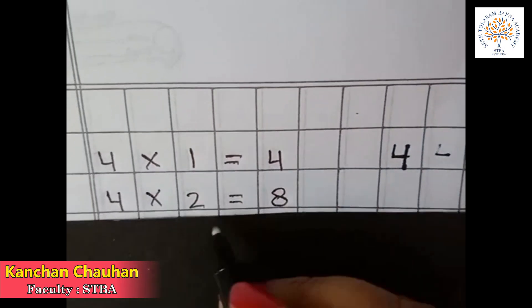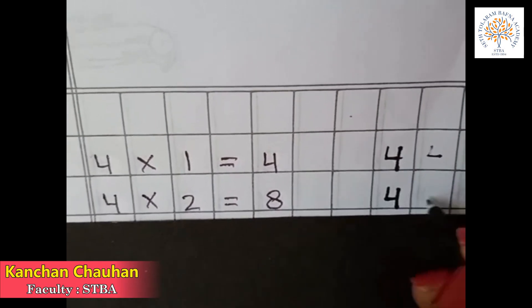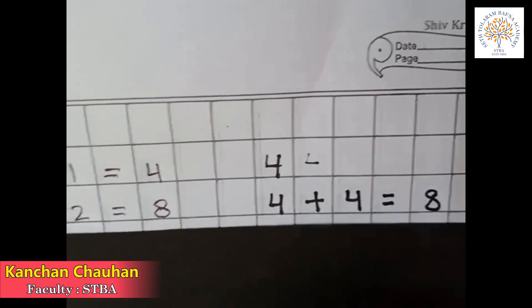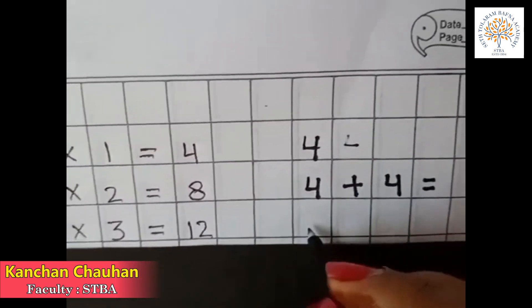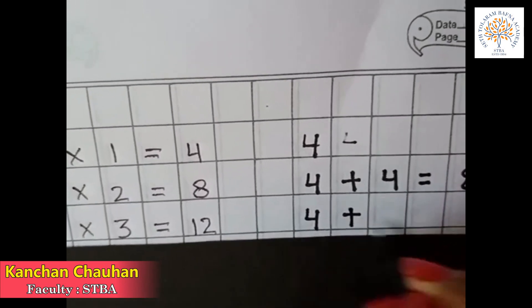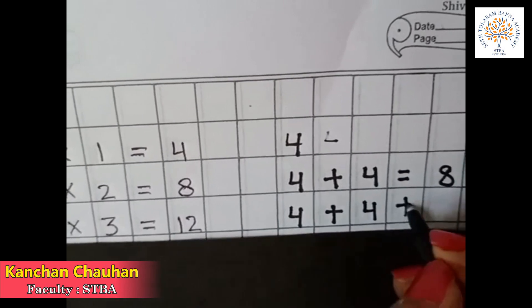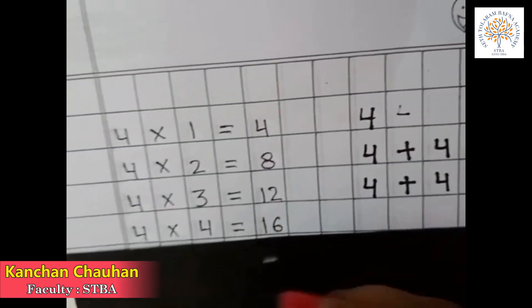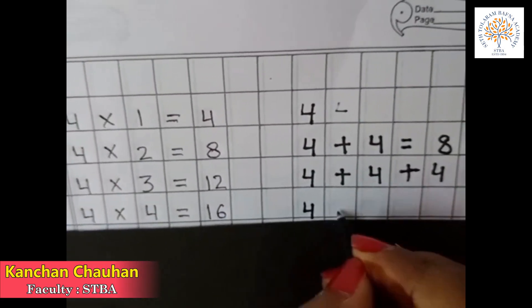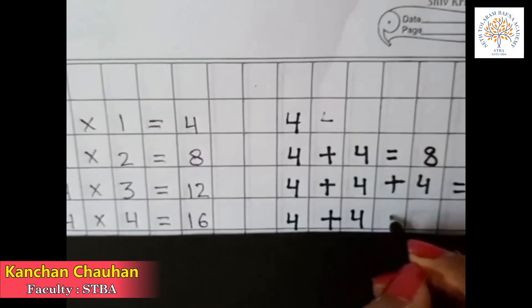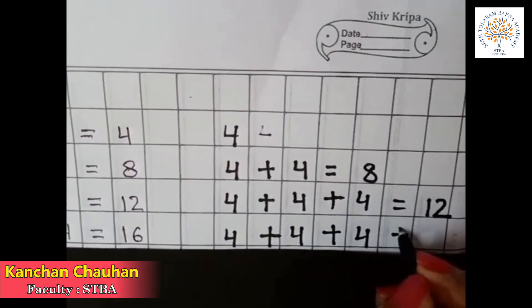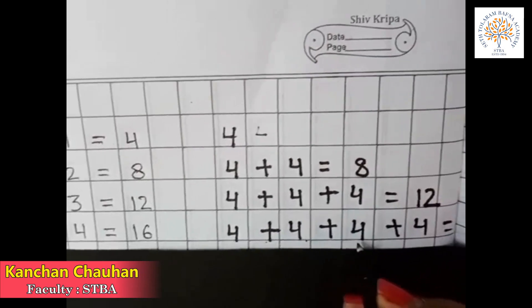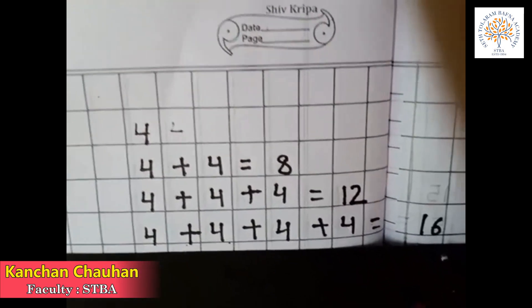4 2s are 8 means 2 times 4 is equal to 8. 4 3s are 12 means 3 times 4 is equal to 12. 4 4s are 16 means 4 times 4 is equal to 16.